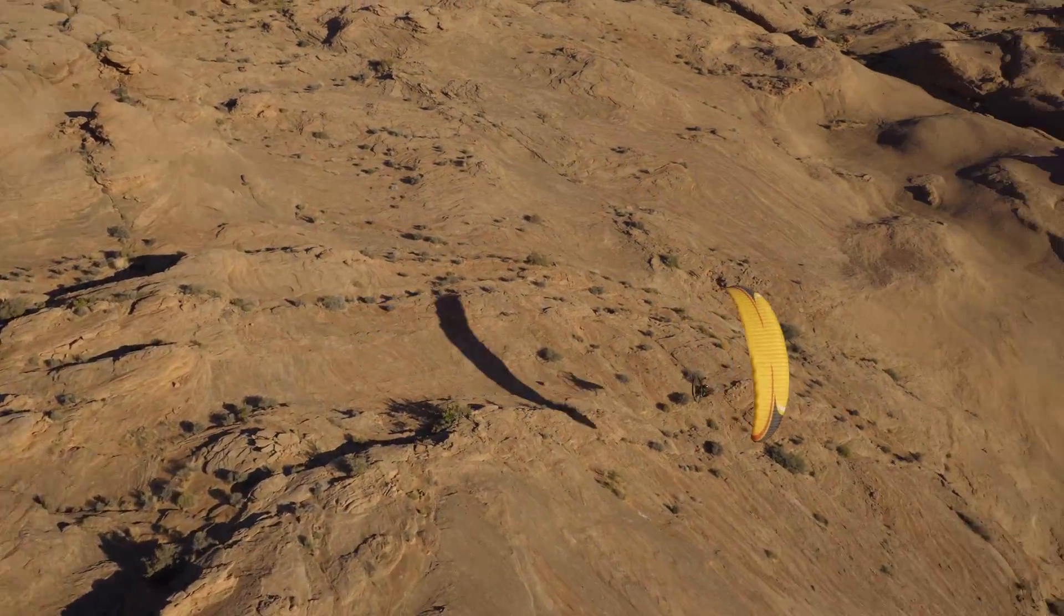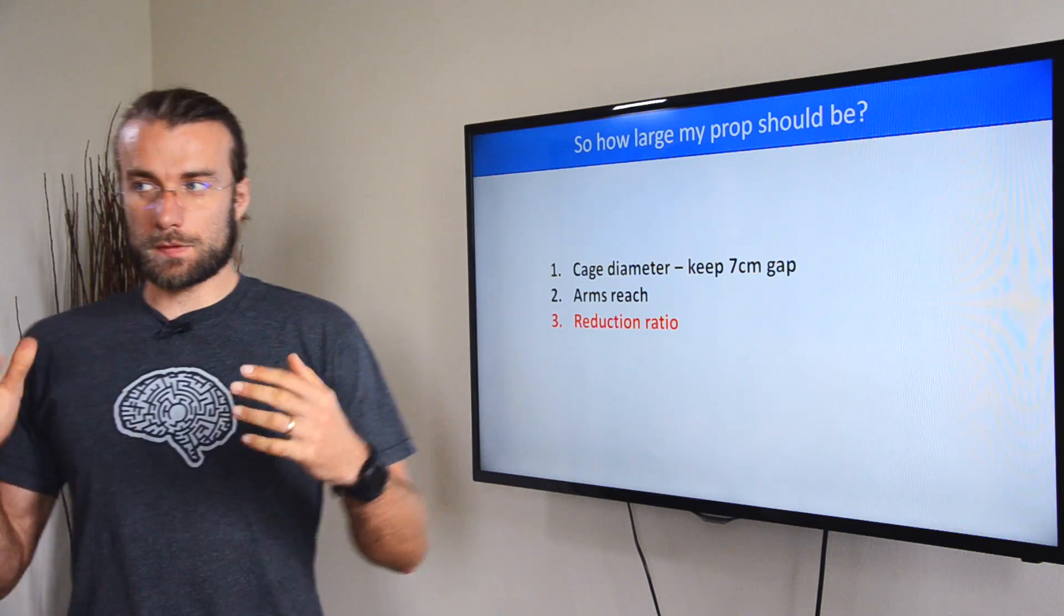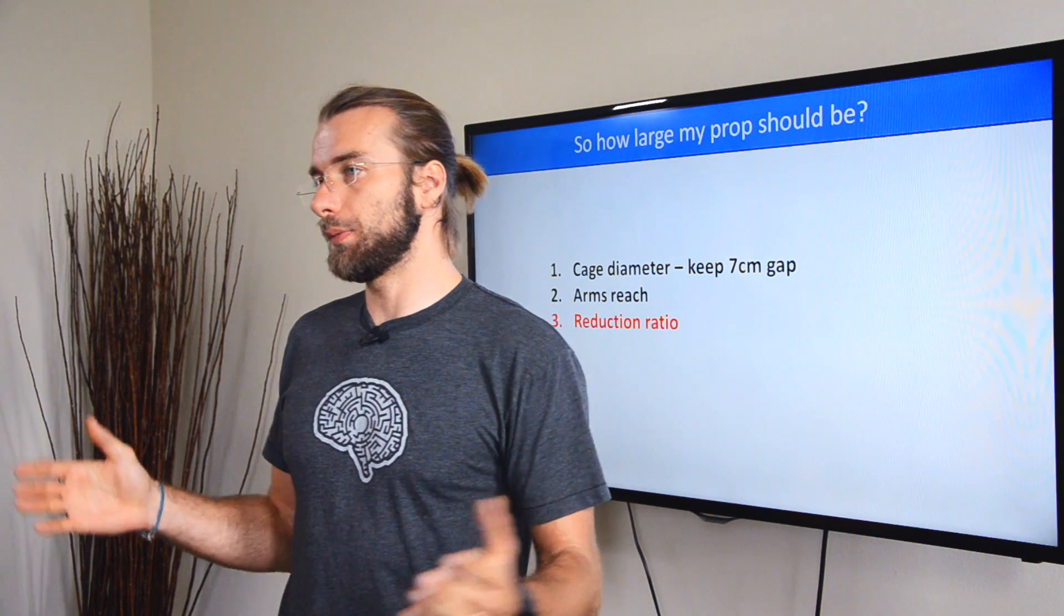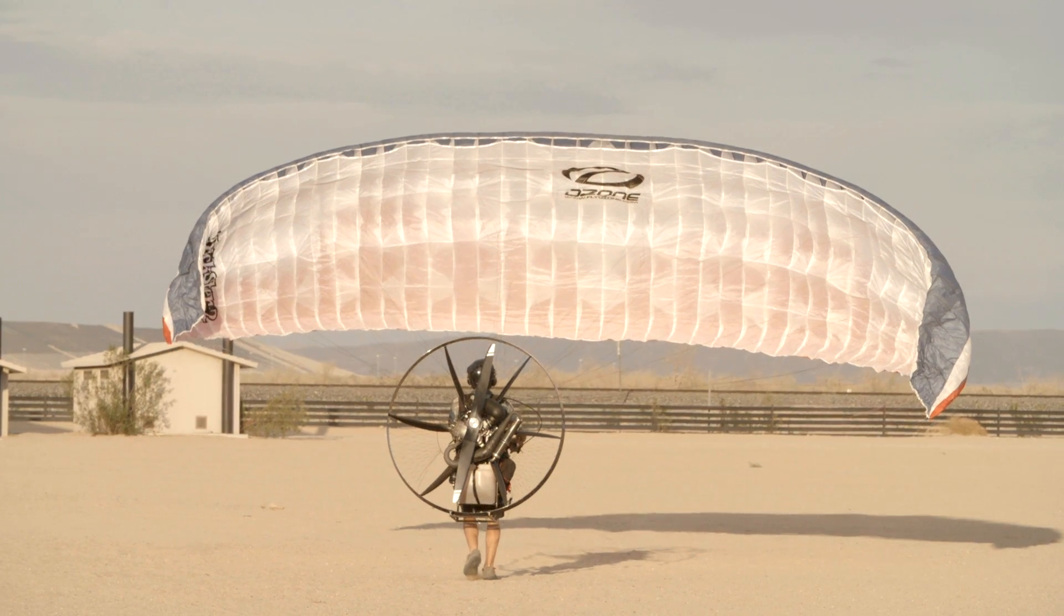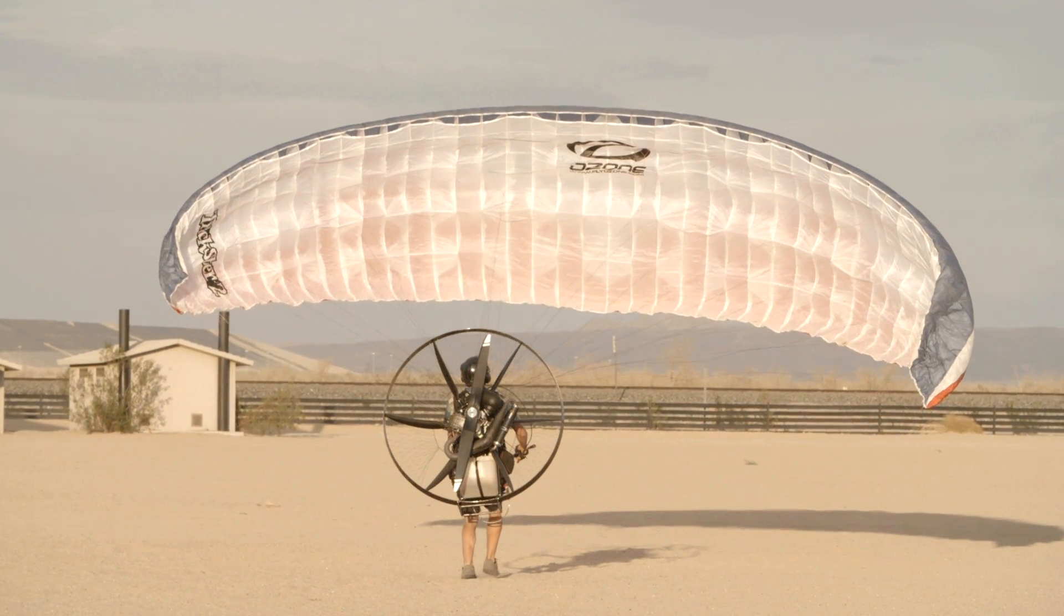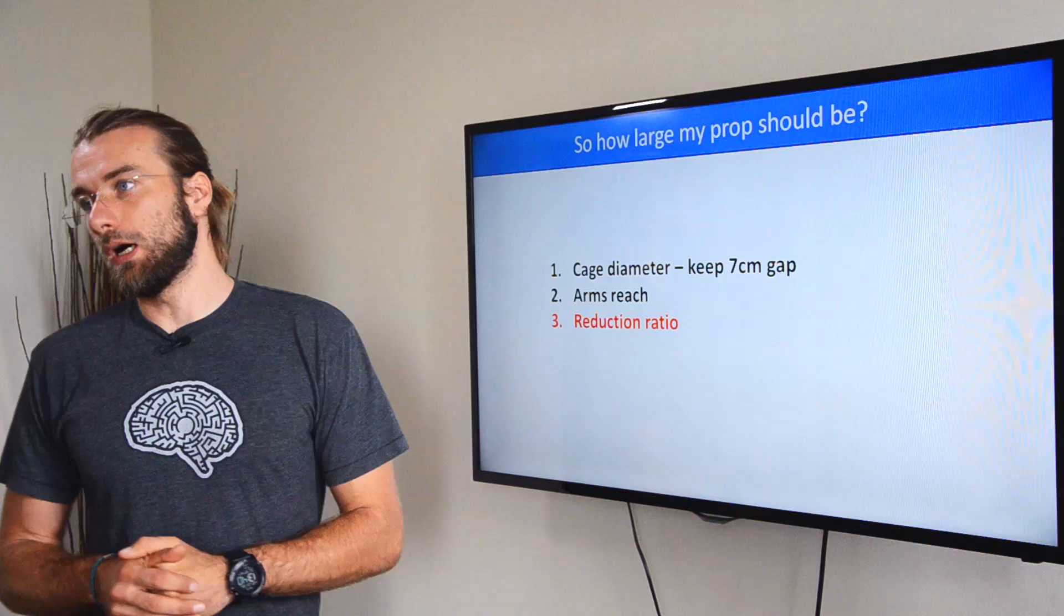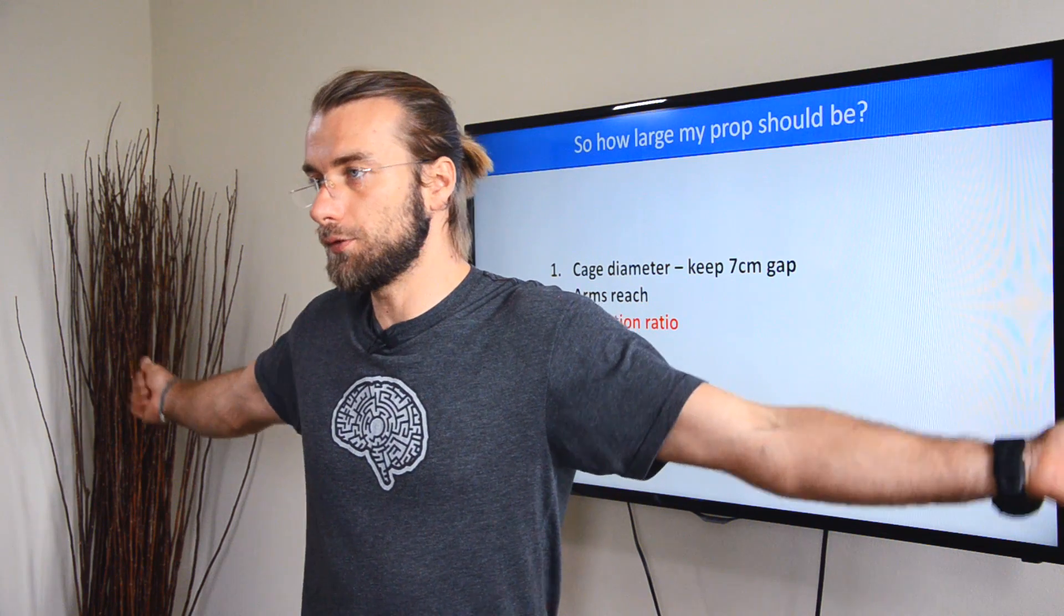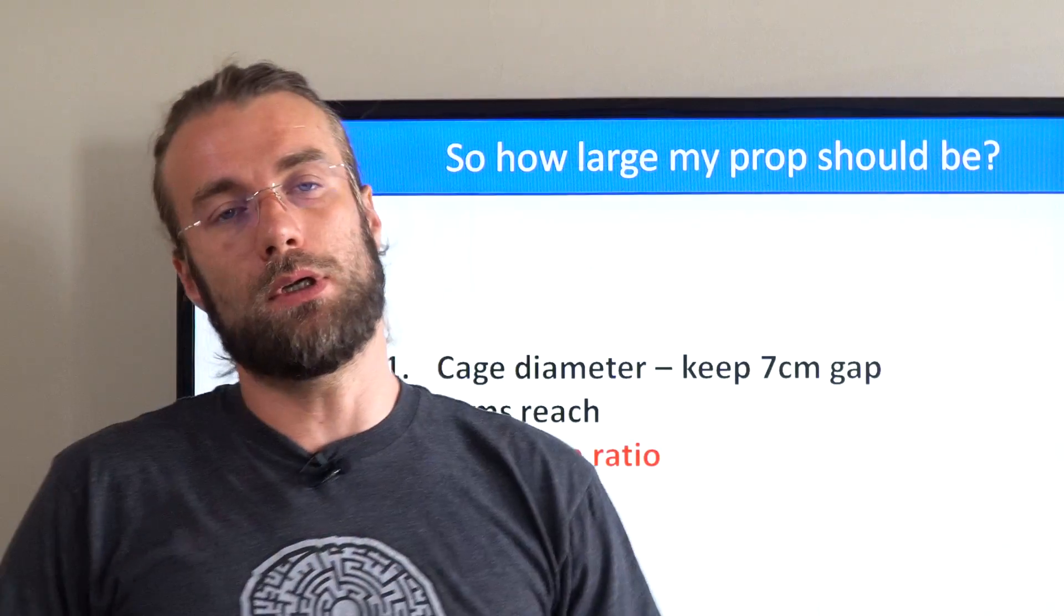So what size of the prop you actually want? I would say the larger the better, take the largest that's possible. Obviously, if you already have a paramotor, this will limit your approach. So if you have an option to choose a larger cage, I would do so, as long as your arms are long enough to reach wide and for a successful takeoff.